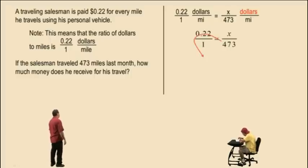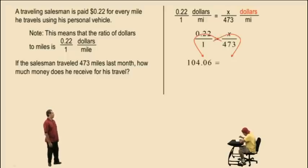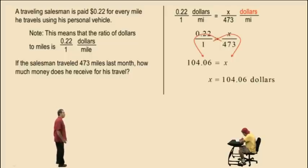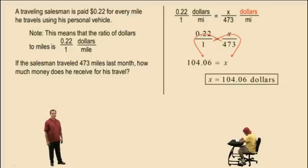Charlie, what's 473 times .22? 104.06. 104.06. Very nice. And 1 times x is x. And that is our answer, 104.06 dollars. That means 104 dollars and 6 cents.